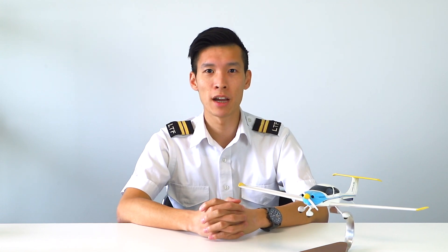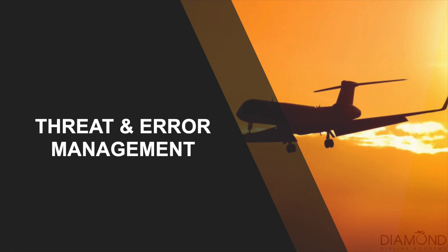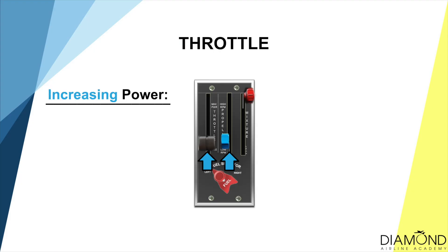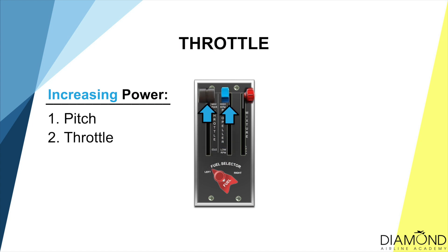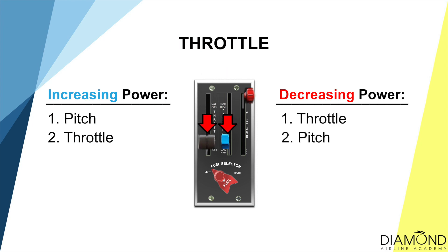Lastly, the crucial part of flight training: threat and error management. What are the threats that may affect our flight today? When we are changing power it's essential to know the sequence. When increasing the power setting: pitch first, then throttle — right to left, blue to black. When reducing the power setting: throttle first, then pitch — left to right, black to blue. Not only is the sequence of changing power important, but also when we change power we have to be smooth and gentle with the engine to ensure normal operation.